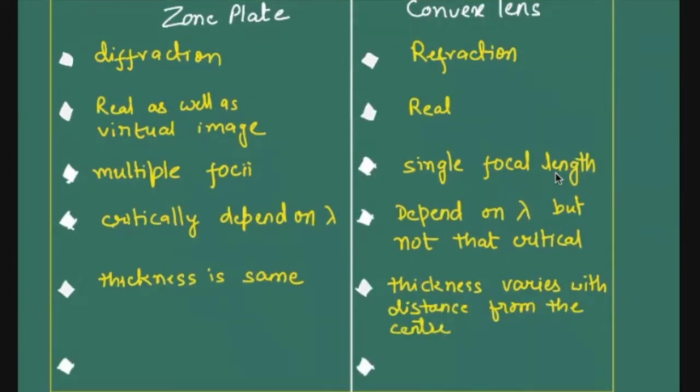Zone plate is independent of material with which it is made. What will be the difference if, let's say, you are using a glass zone plate and acrylic zone plate, the change would be in the overall intensity. But in a lens, it has to do with the focal length of the lens. So, independent of material. And here, it is dependent on material.